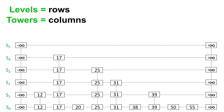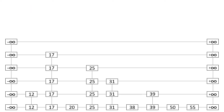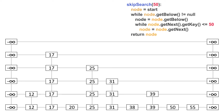Now let's do a search. Let's say we're searching for a key of 50. We can already see a key of 50, but how do we get there? We always start at the top left node in the skip list, because it's the highest level and it's the smallest key value on that level — so it's always going to be negative infinity on the highest level. The first thing we do is see if we can drop down, and we can drop down if the below reference of this node is not null.